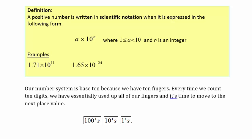Definition: a positive number is written in scientific notation when it is expressed as some number times 10 to some integer power. The value 'a' must be between 1 and 10 — just a single digit in front of the decimal, no place value larger than the ones place. We can include 1 but not 10. The exponent 'n' must be an integer, either positive or negative.